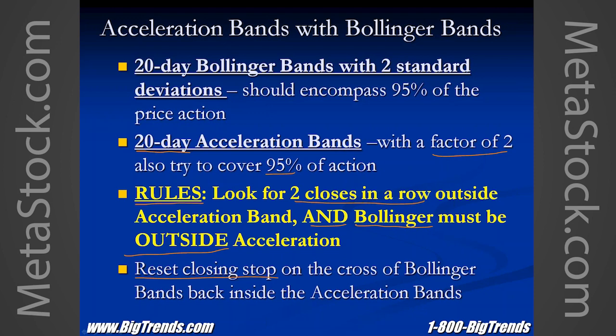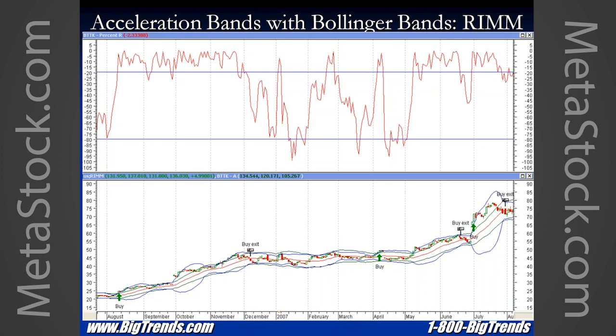The rules here: look for two closes in a row outside of the acceleration band and the Bollinger Band needs to be outside of the acceleration band. What will happen is the Bollinger Band will race to catch up to a breakout faster than the acceleration band. Then reset your stop — once the cross of the Bollinger Band inside the acceleration bands happens, you get out if it closes below that bar's low. This is Research in Motion — now BBRY, the maker of the BlackBerry. Before Apple ate their lunch along with Google's Android devices, RIM was a wonderful leader in the whole mobile market initially.